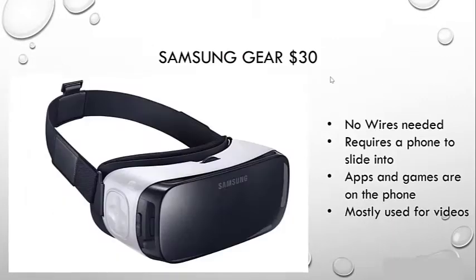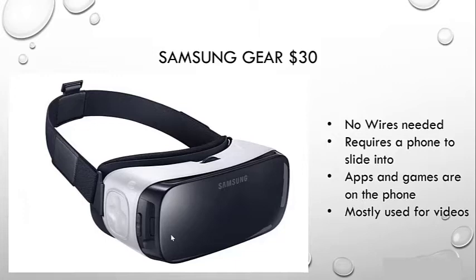Next we have the Samsung Gear, which is not the same as the rest of the headsets. The Samsung Gear only allows you to slide in your phone — there's a latch on the front that you unclip, and you remove the cover from your phone and slide it in. Most of the time you'll be watching videos rather than playing games. YouTube has an option where you can watch 360 videos, and that's where you'll primarily be.